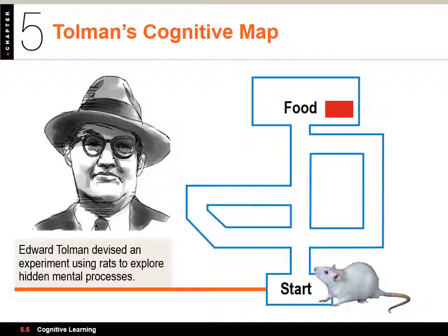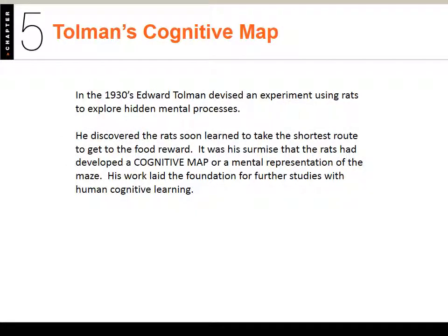Edward Tolman, back in the 1930s, devised an experiment using rats to explore hidden mental processes. He discovered the rats soon learned how to negotiate and take the shortest route to get to the food reward. It was his surmise that rats had developed a cognitive map, or mental representation of the maze. His work laid the foundation for further studies with human cognitive learning.